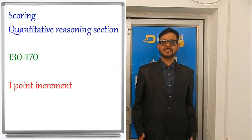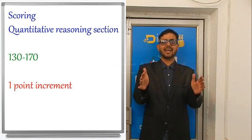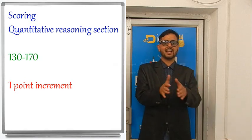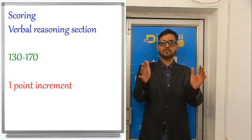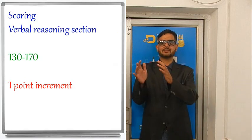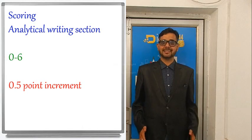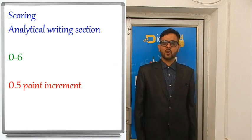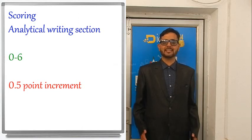Now let's come to scoring. You will get a separate score for the analytical writing section, a separate score for the verbal reasoning section, and a separate score for the quantitative reasoning section. Quantitative and verbal reasoning sections are each scored on a 130 to 170 point scale in one-point increments, where 130 is the minimum and 170 is the maximum. The analytical writing section is scored on a 0 to 6 point scale in 0.5 point increments. There is no penalty for answering questions incorrectly, so it is to your benefit to attempt every question.